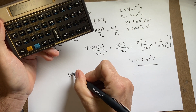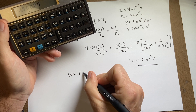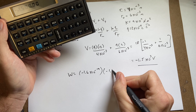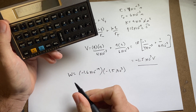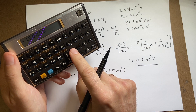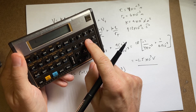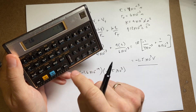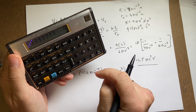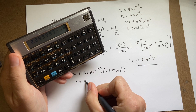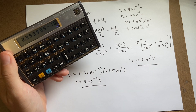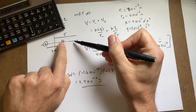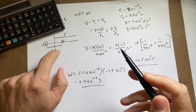Now I find the work done: charge of electron negative 1.6 times 10 to the negative 19 coulombs, times the change in potential negative 1.5 times 10 to the third volts. That gives 2.4 times 10 to the negative 16 joules. This is a positive number, which makes sense — I'm bringing a negative charge closer to a negative charge, so I have to do positive work to push it in.